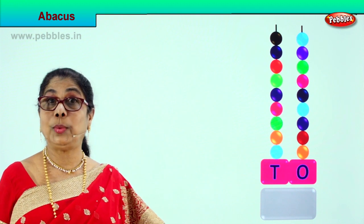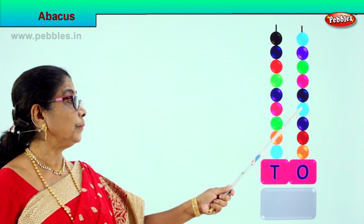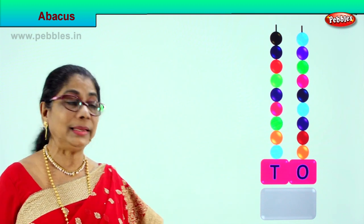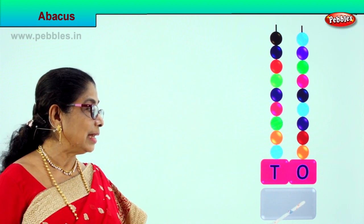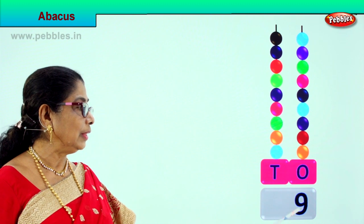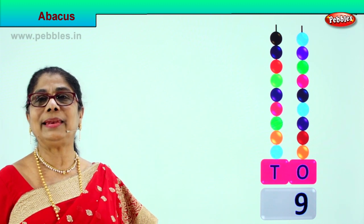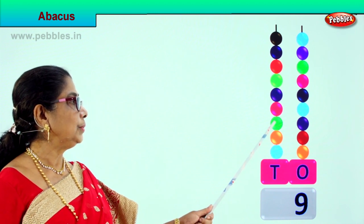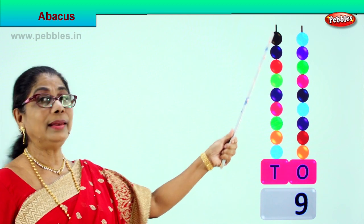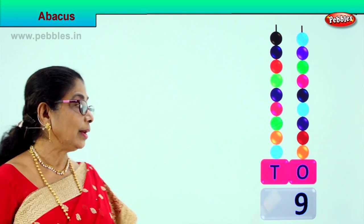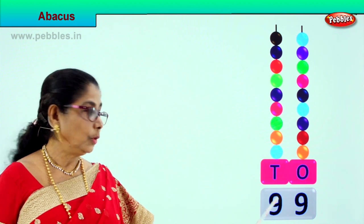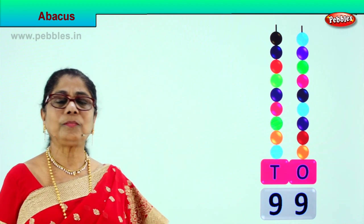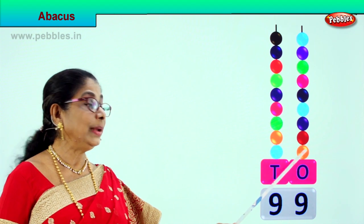Let's count all the ones: 1, 2, 3, 4, 5, 6, 7, 8, 9. There are 9 beads in the ones place — we write 9. That means 9 ones. Let's count the tens place: 1, 2, 3, 4, 5, 6, 7, 8, 9. Each is 10, so we write 9 tens. 9 tens, 9 ones: 99. Each bead in the tens rod is 10; here each bead is 1.